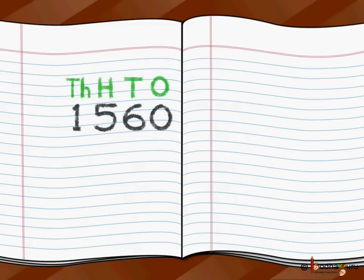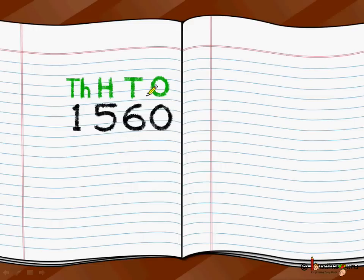So how do we do it? We write down: 1560 trees were there originally. We write it correctly with the right place value — 1 comes at the thousand place, 5 comes at the hundred position, 6 here, and 0 here. Ensure you write the numbers correctly at their place values.